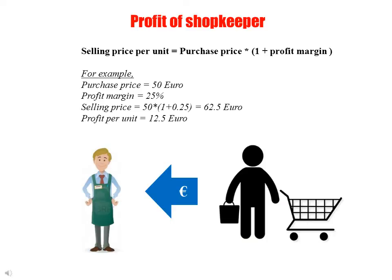After costs, the next question is how a shopkeeper pays for all the costs — simply from the profit made by selling goods. In this game, the selling price per unit is equal to the purchase price multiplied by (1 plus profit margin). For example, for a purchase price of 50 euro per unit with a profit margin of 25%, the selling price per unit will be 62.5 euro. Thus, for every unit sold, the shopkeeper will make a profit of 12.5 euro.